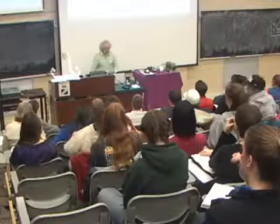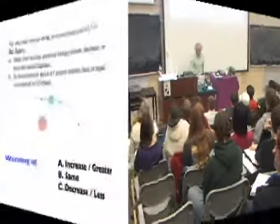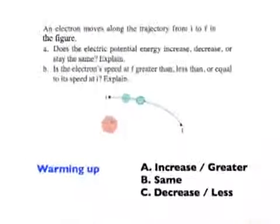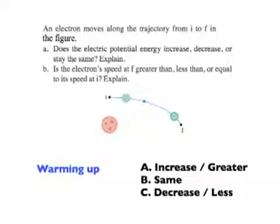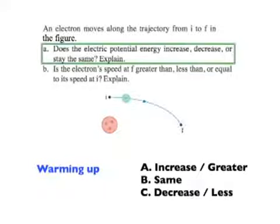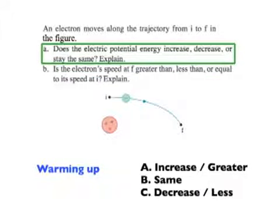I'm going to start with this one right here. An electron moves along this trajectory from the initial point to the final point as shown right here. Question: as the electron is moving, does its electric potential energy increase, decrease, or stay the same?